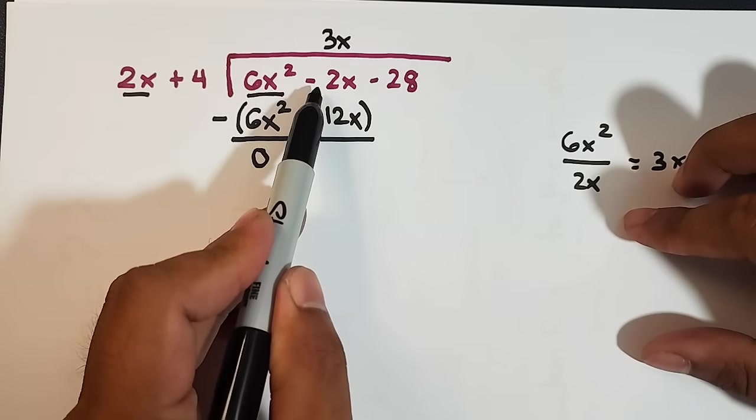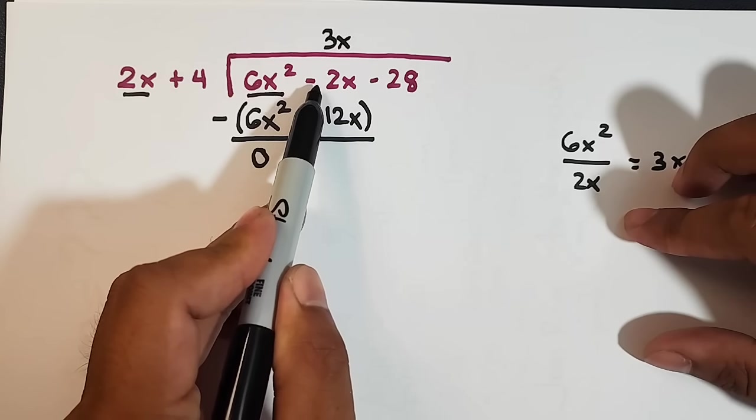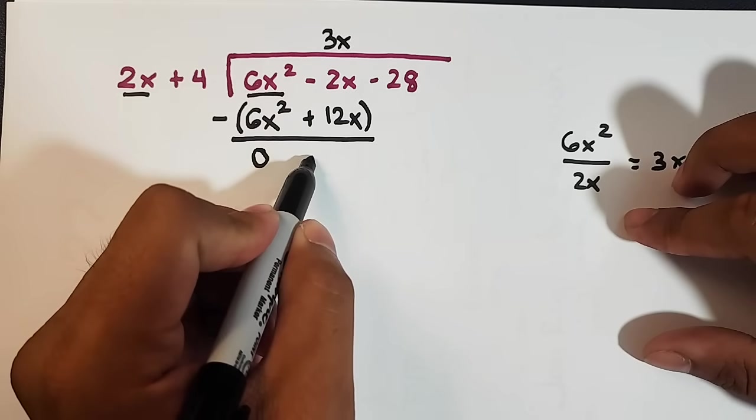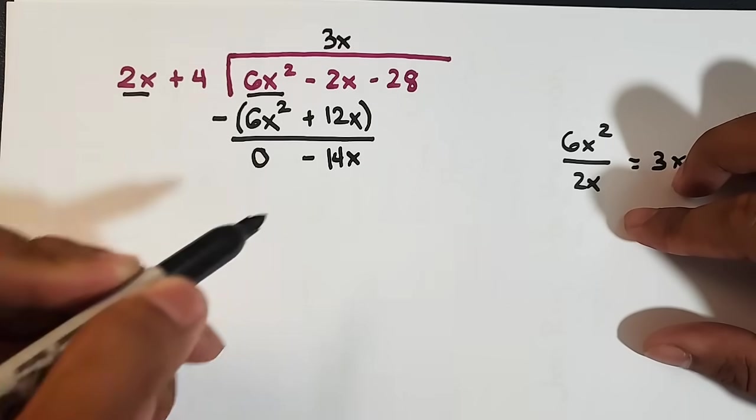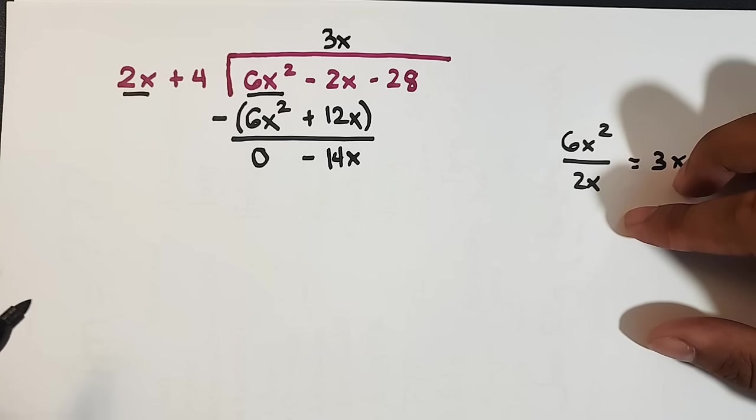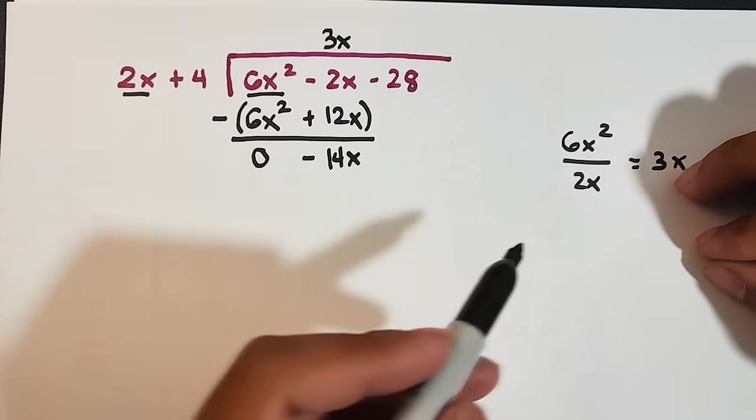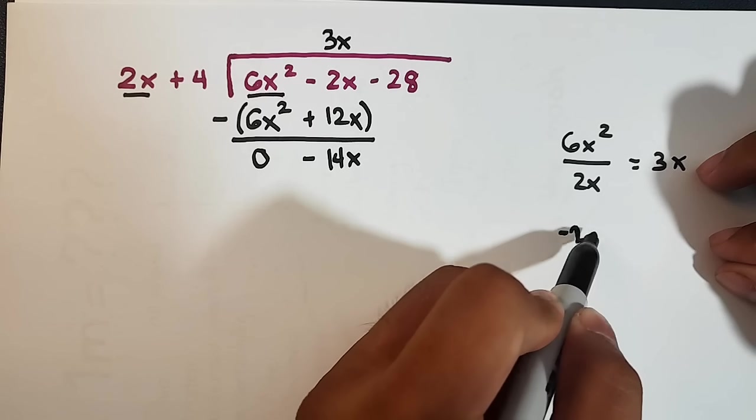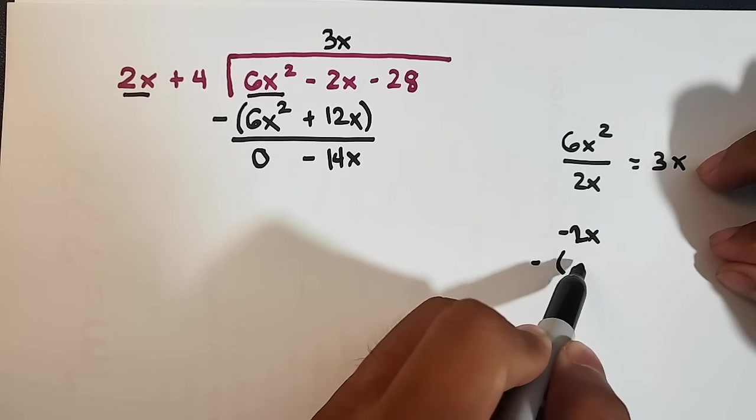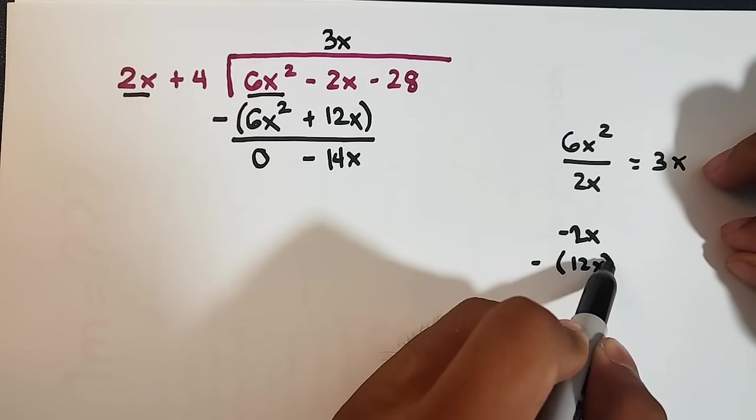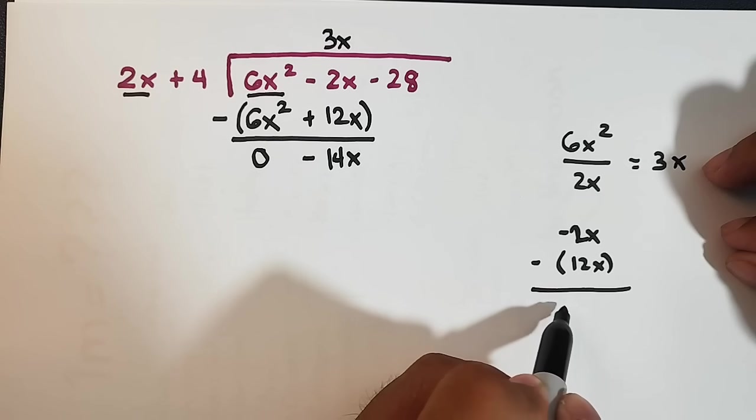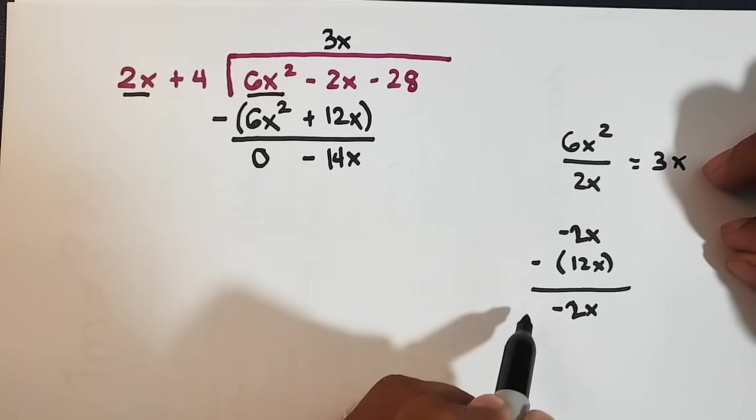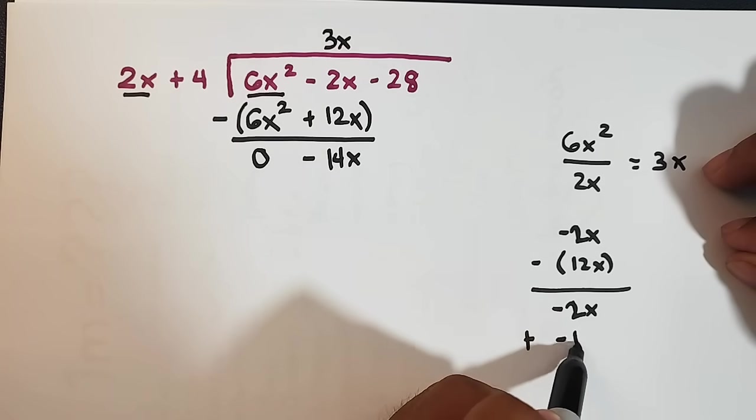And then here, our negative 2x minus 12x, it will become negative 14x. So what happened there guys, let me show you. Our negative 2x, minus 12x. This 12x will become negative. So it becomes negative 2x plus negative 12x.